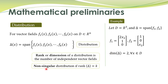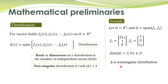A distribution will be called non-singular if its rank is equal to the number of vector fields. Here, there are k vector fields, and if the rank of that distribution equals the number of vector fields, we call it a non-singular distribution. This example is a non-singular distribution because it has two vector fields and rank is also equal to 2.